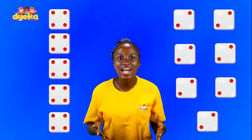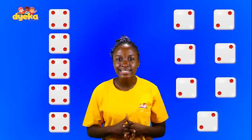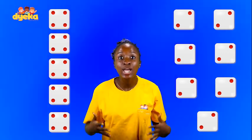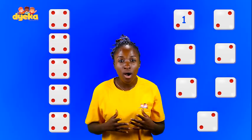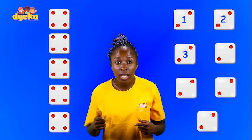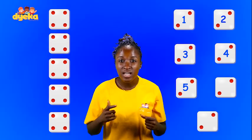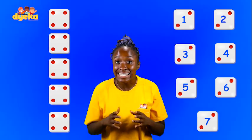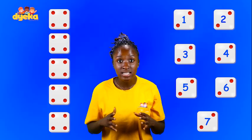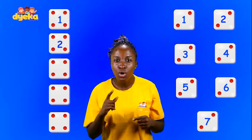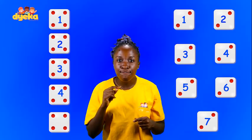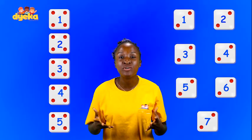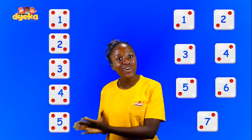How many dice are in each group? Let's count them to find out. The category with 2 dots has 1, 2, 3, 4, 5, 6, 7 dice. And the category with 4 dots has 1, 2, 3, 4, 5 dice. This means there are more dice with 2 dots than dice with 4 dots.